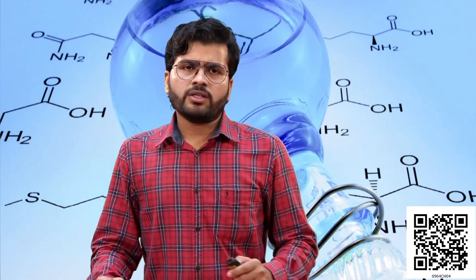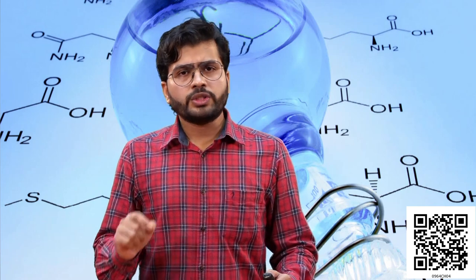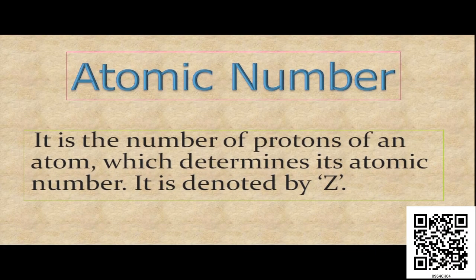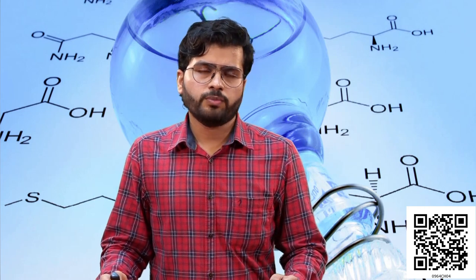Now moving on — another subatomic particle discovered by Goldstein is the proton, which is present in the nucleus of an atom. That gives us another phenomenon — the atomic number, which is denoted by the letter Z. What is atomic number? It is the number of protons of an atom present in the nucleus. And as you know, the number of protons is equal to the number of electrons, which makes an atom electrically neutral.